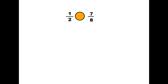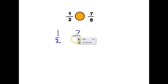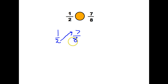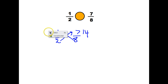So what do I mean by cross-multiply? Exactly this. I'm going to take 1 half — there's my 1 half — and also write our 7 eighths right there. When I cross-multiply, I'm going to multiply right across: here to here, and here to here. So 2 times 7 is 14, and 8 times 1 is 8.